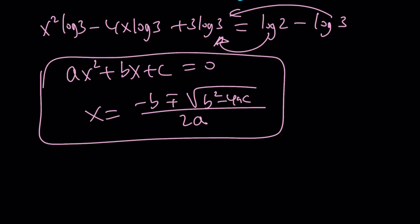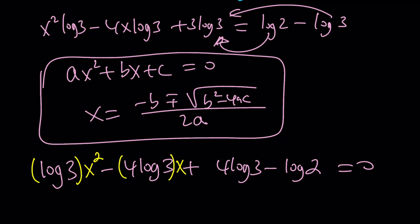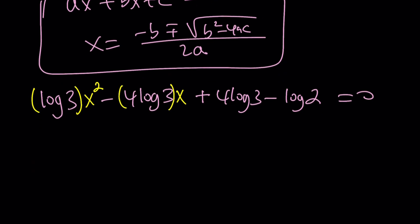But let's go ahead and make this a nice quadratic first. So, I'm going to write the log 3 and then minus the 4 log 3. And then I want to go ahead and bring my constants together. That's going to be 4 log 3 minus log 2 equals 0. Notice that this will be the coefficient of x squared and this will be the coefficient of x. And the constant term.